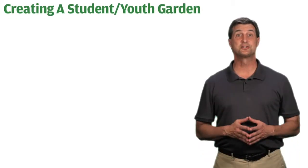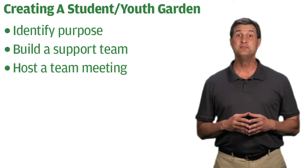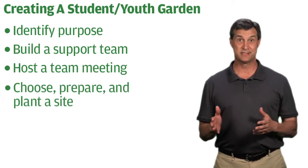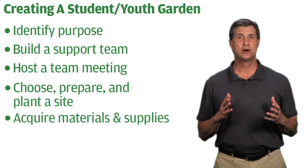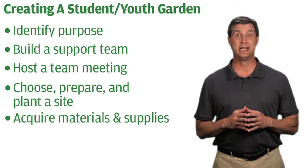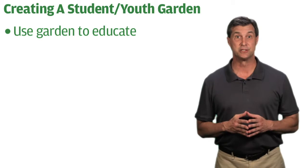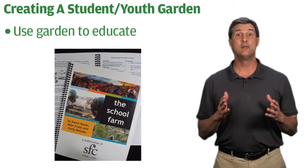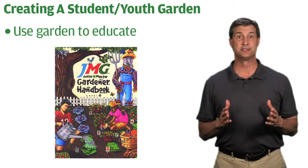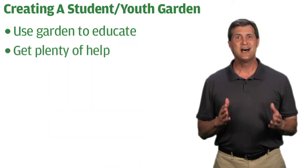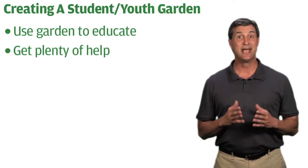Here's how to start a successful student garden: identify the purpose of the garden, build a support team at the school, host a team meeting, then choose, prepare, and plant a site. Seek donations or write grants to help acquire soil, tools, seeds, or whatever else you need. Then use the garden to educate — two good sources of ideas are the School Farm Education Resource Guide published by Sustainable Food Center, and Junior Master Gardeners produced by AgriLife. It takes a lot of hands to maintain a school garden, so make sure you have plenty of help through class projects, student volunteers, and even parents.